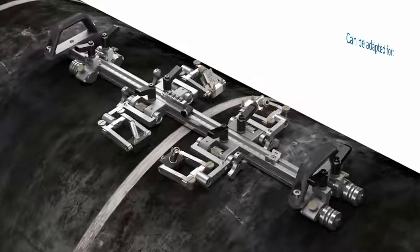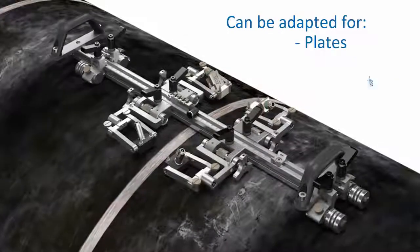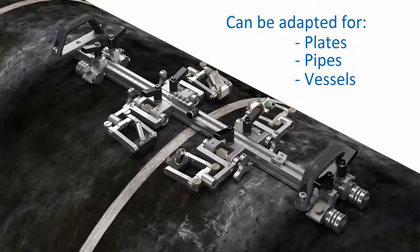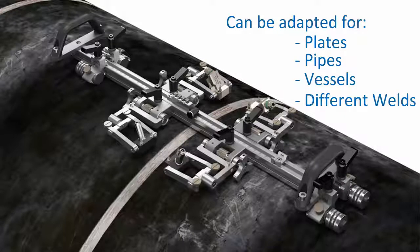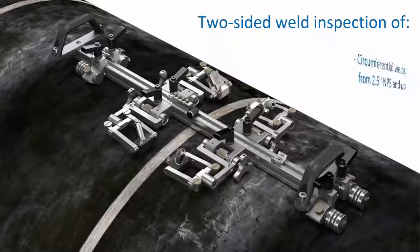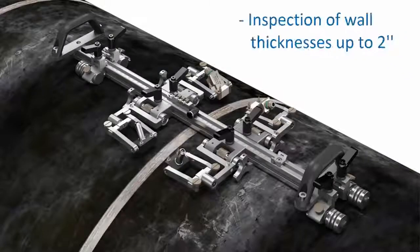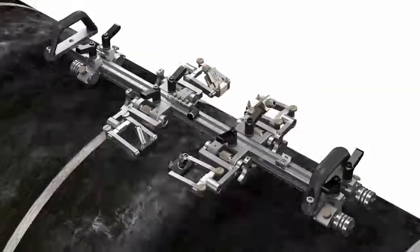ZETEC Weld Crawler is an encoded, manually driven scanning mechanism that can be adapted for different inspection configurations on plates, pipes, or vessels, as well as different weld orientations. The basic scanner kit allows for two-sided inspection of circumferential welds from 2.5 inches nominal pipe size and up, and for wall thicknesses up to 2 inches.